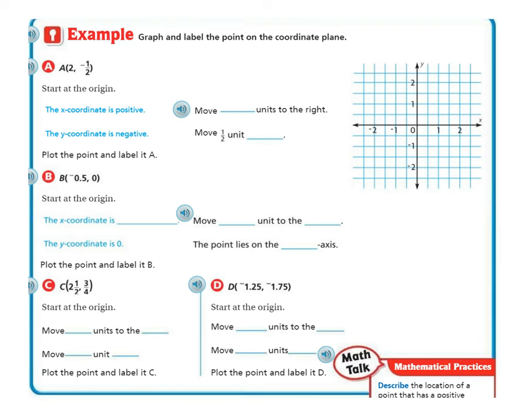Now on page 128, join me and follow along. Graph and label the point on the coordinate plane. The coordinate plane is this thing right over here, this big x and y axis. The whole thing, all of it together, is considered our coordinate plane.